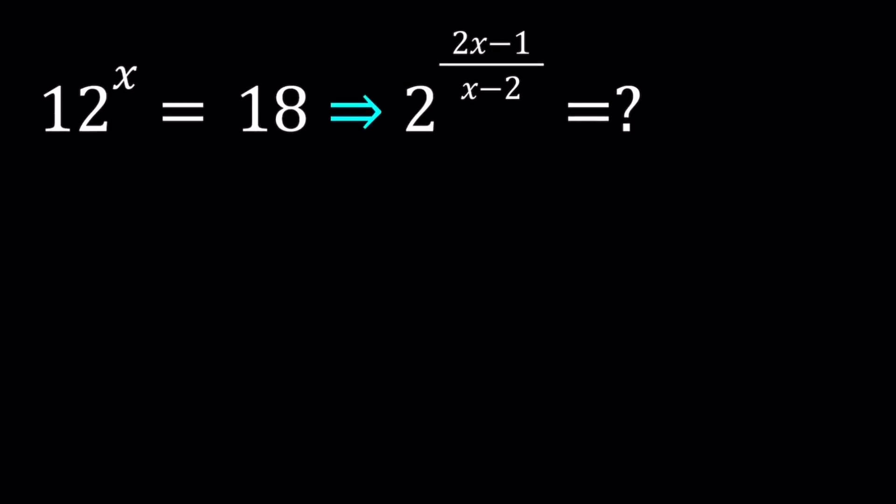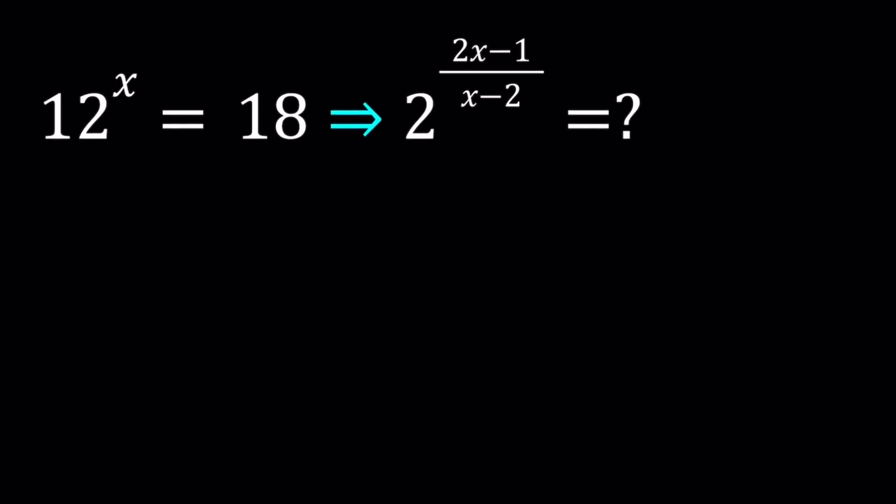All right, let's go ahead and get started with today's problem. We have this exponential equation, 12 to the power x equals 18, and we're supposed to evaluate numerically 2 to the power 2x minus 1 divided by x minus 2.